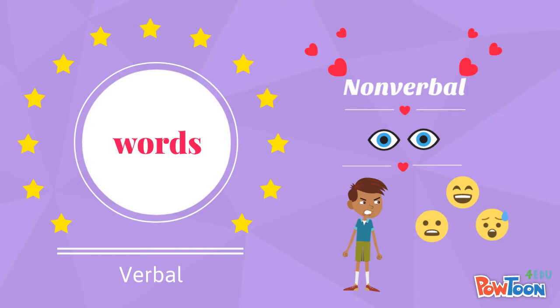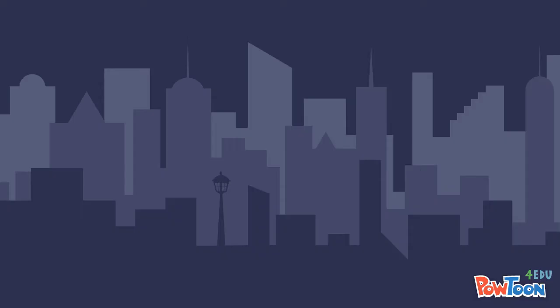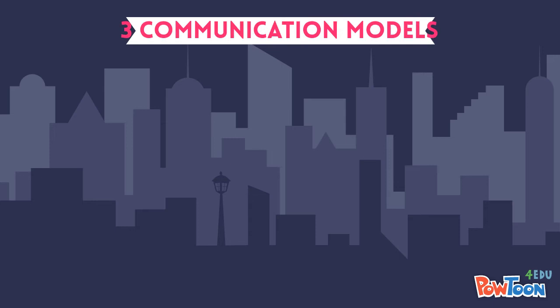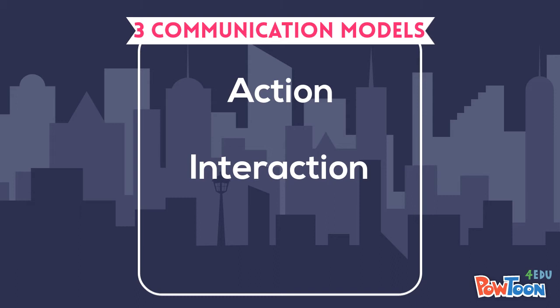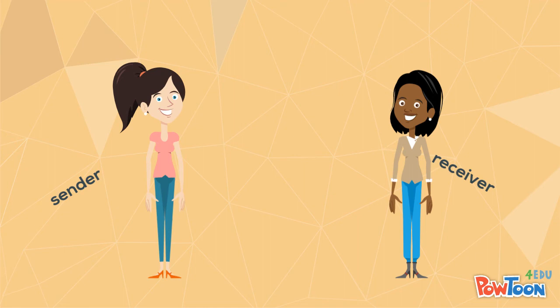Now that we know what communication is, let's see what communication looks like. There are three models of communication that demonstrate how people interact in conversation: communication as action, communication as interaction, and communication as transaction. In all three models, there are two communicators — the sender and the receiver.